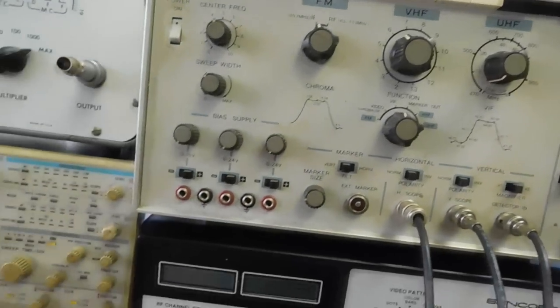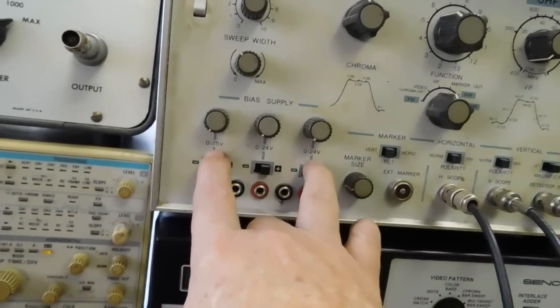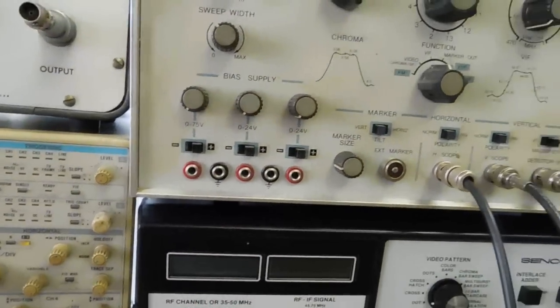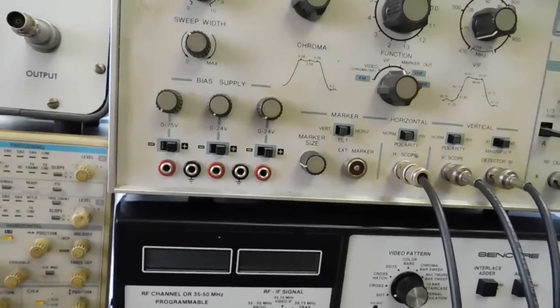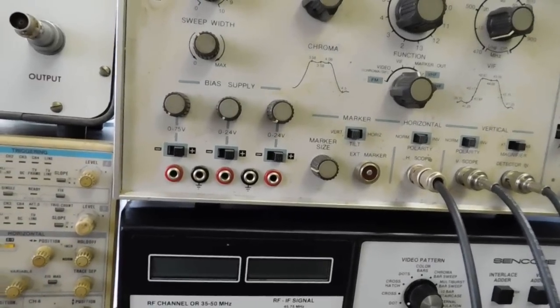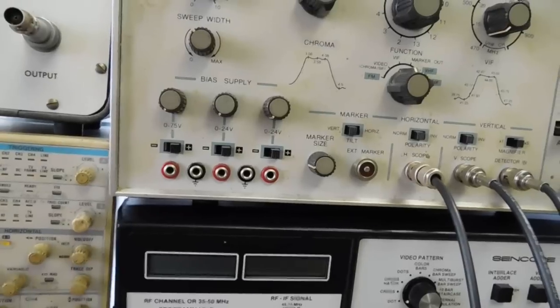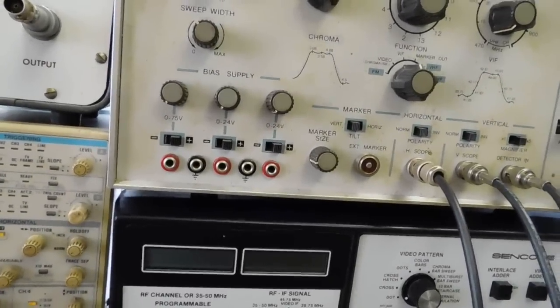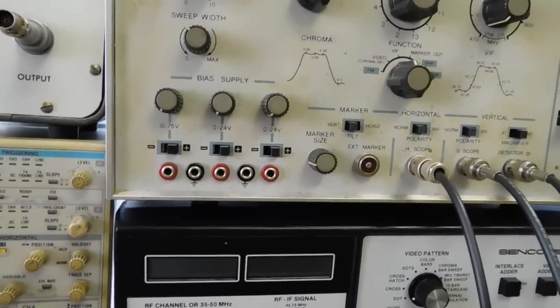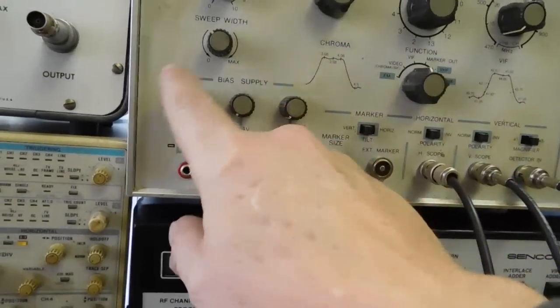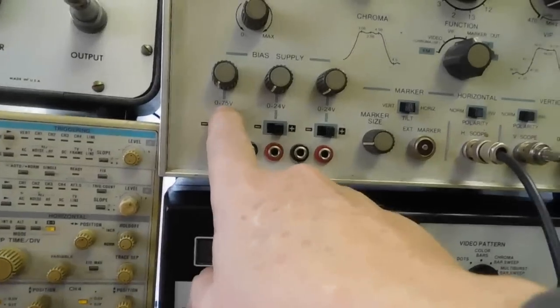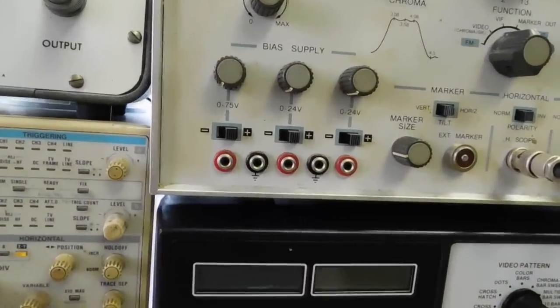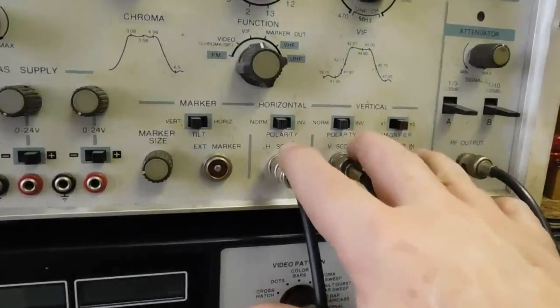Now the other thing about it is there are three different floating bias supplies. The grounds float and everything. So doing a lot when you're working on TV, they generally want you to supply a negative voltage into the AGC circuit to basically shut it down so it doesn't fight you when you're trying to do an IF alignment. And these are 0 to 75 volts, 0 to 24, 0 to 24. And then you can plus or minus them.